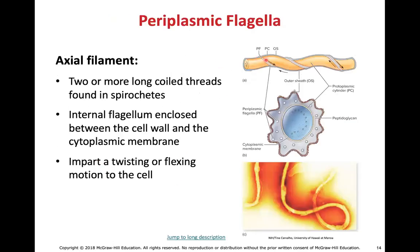Periplasmic flagella are a bit different structurally. These axial filaments are actually embedded within the wall of the cell, and we typically see these in spiral-shaped bacteria. The flagella wrap around the cell, contract, and the cell corkscrews — building tension like a spring, which when released flings the cell across the space.